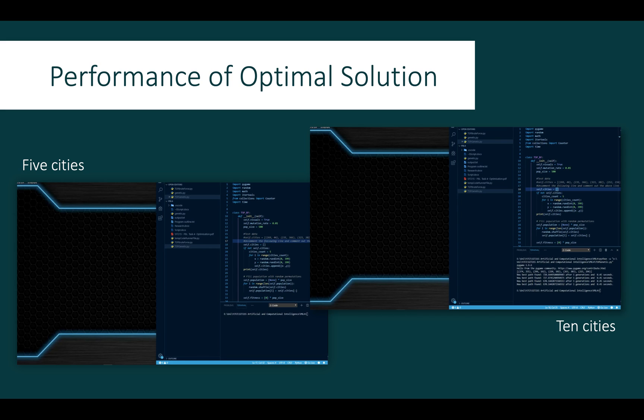Running the solution on smaller city counts with a relatively generous population size of 500 generates the best path extremely efficiently. For 10 cities, the best path was found in less than a second and only taking 17 generations. Comparatively, a brute force approach for 10 cities takes upwards of 45 seconds on the same machine.